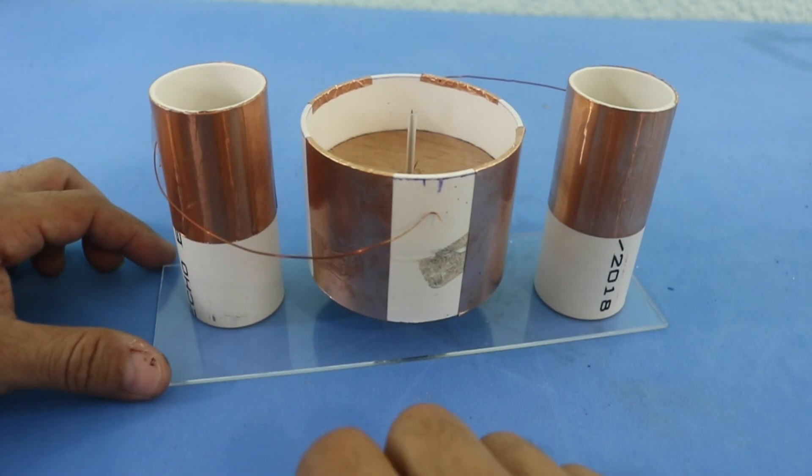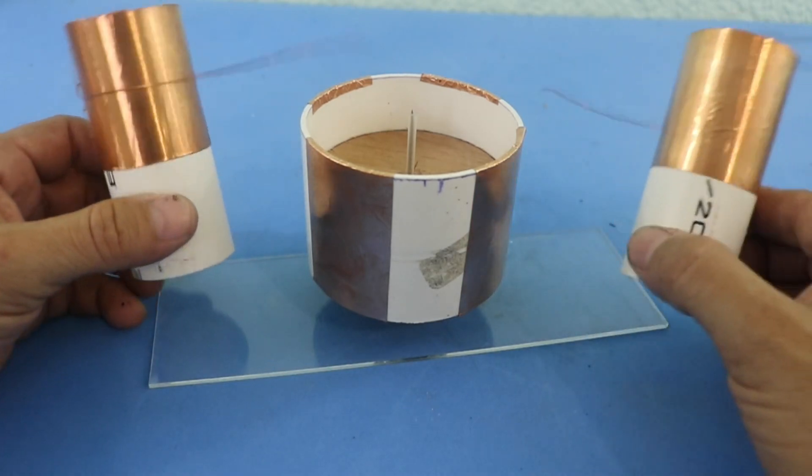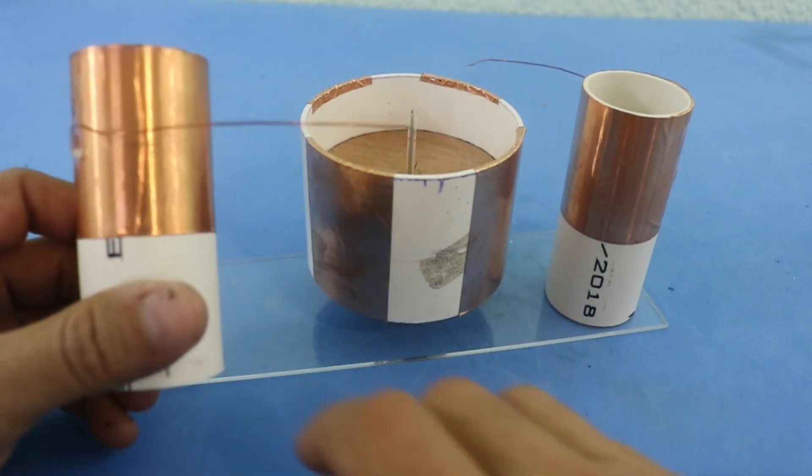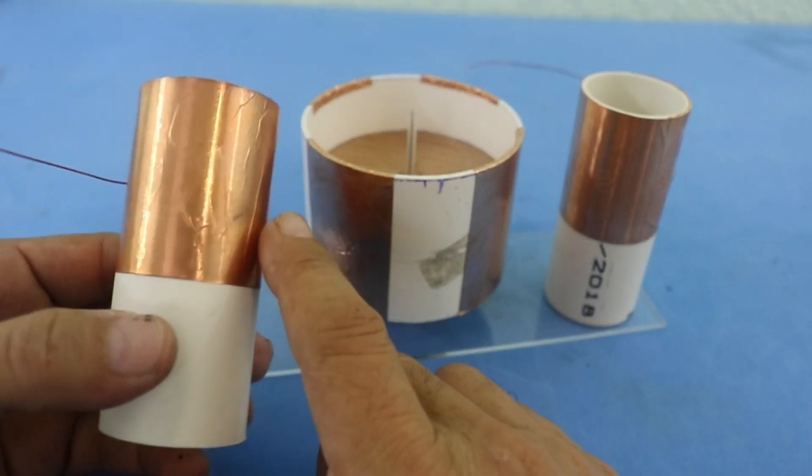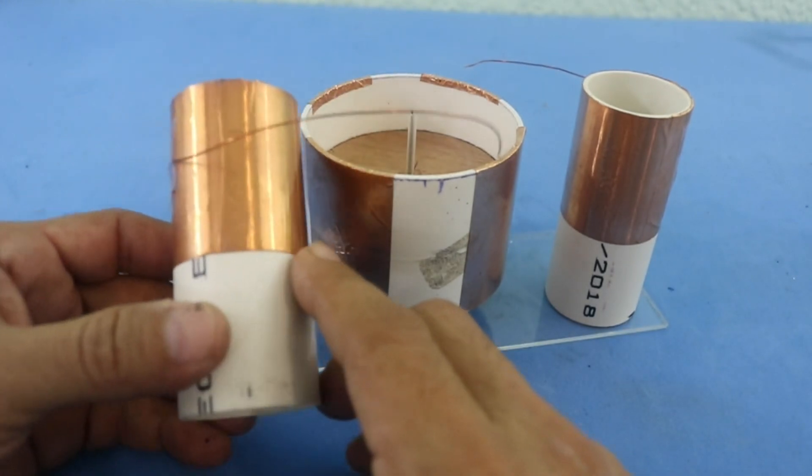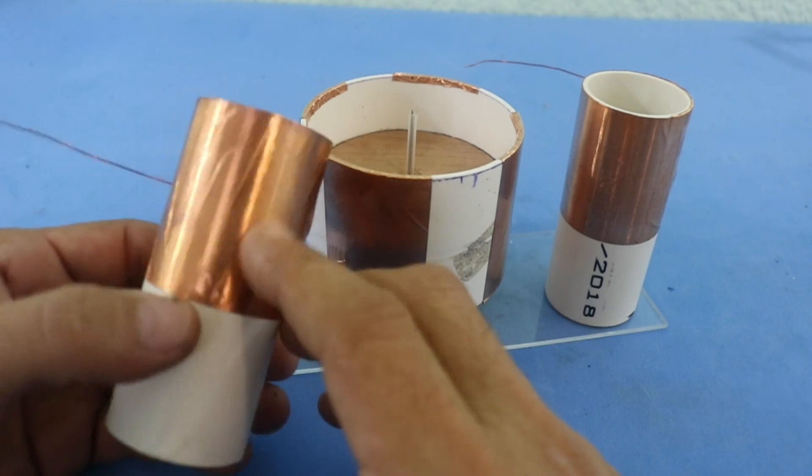It is made mostly with PVC pipes. You can see here the two electrode pipes with copper tape around. You can also use aluminum tape or even kitchen aluminum.